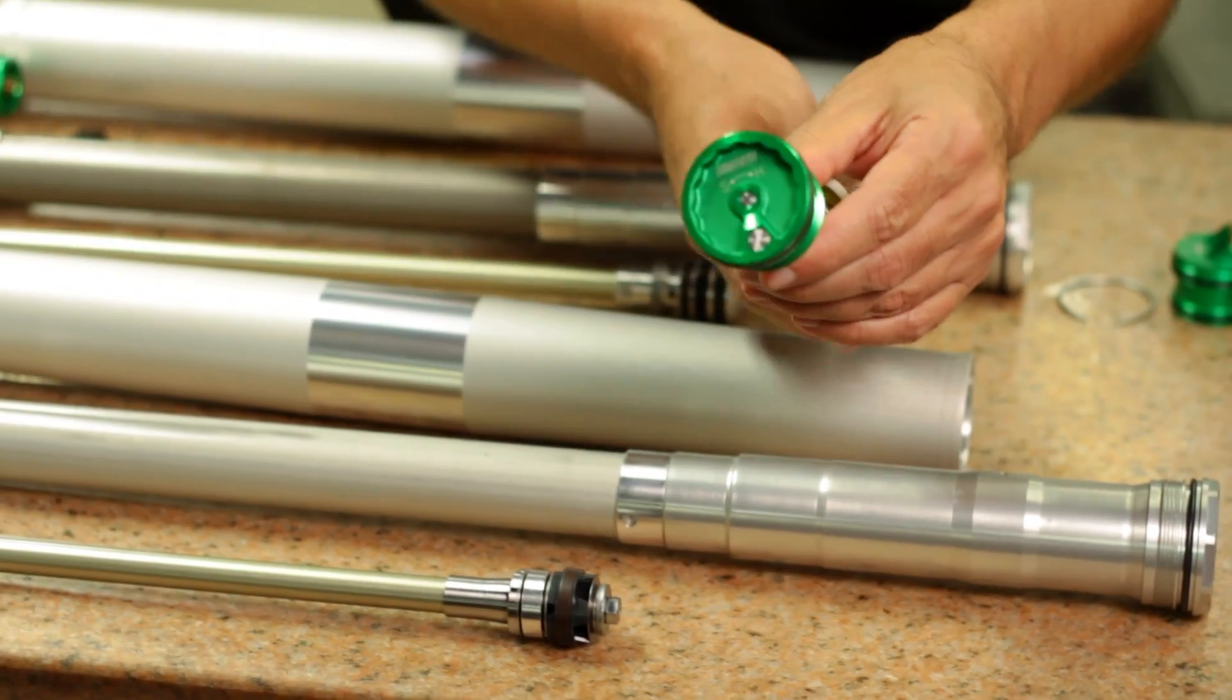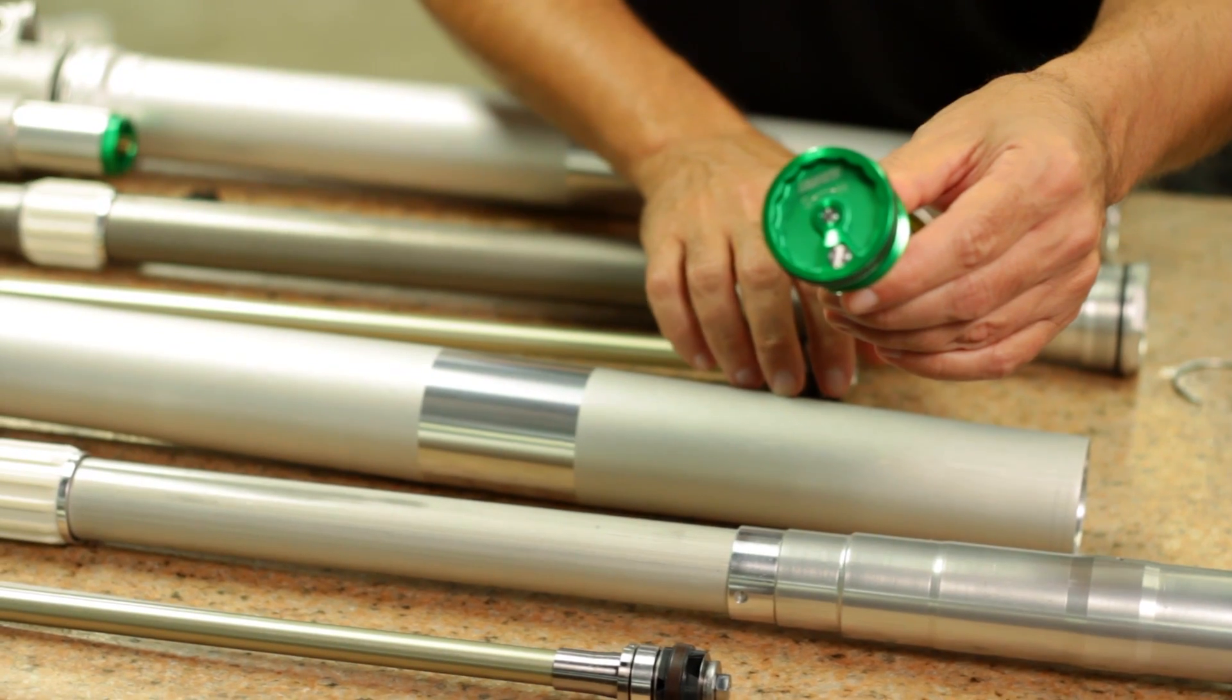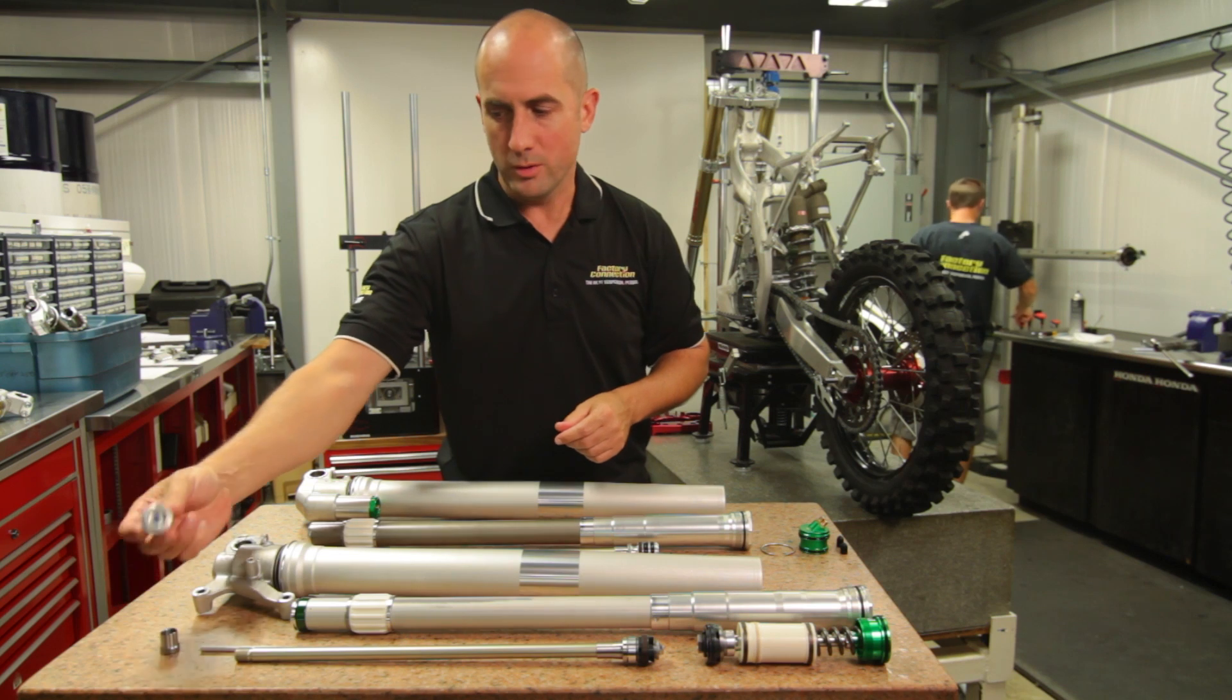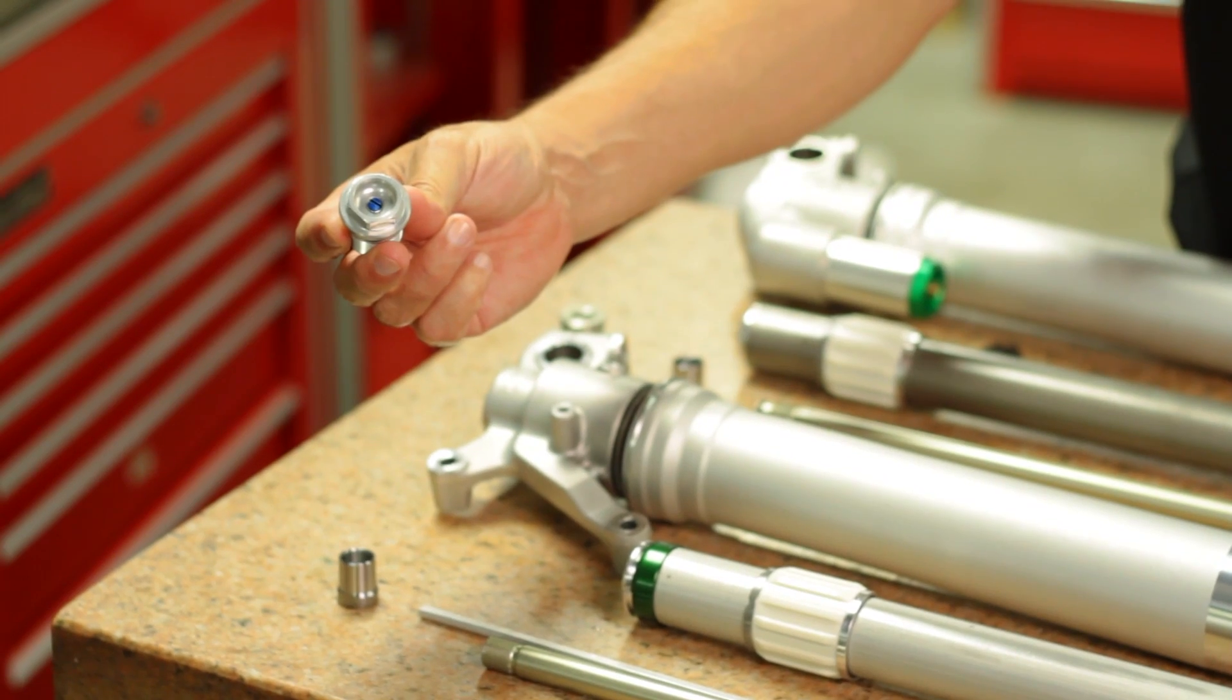On the hydraulic side, we've got the compression adjuster here, which you adjust with a screwdriver, as we've all known and done for quite some time. The rebound adjuster is in the standard place at the bottom of the fork of the twin chamber core.